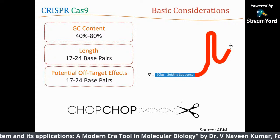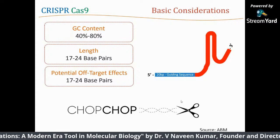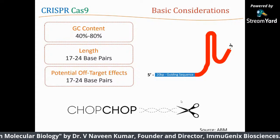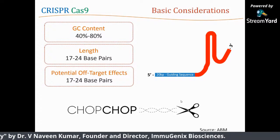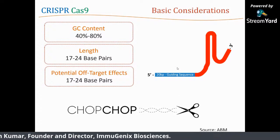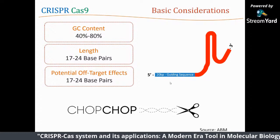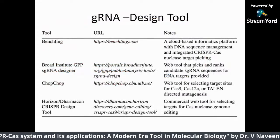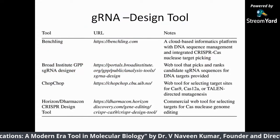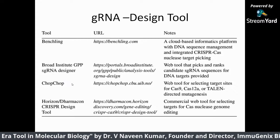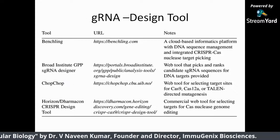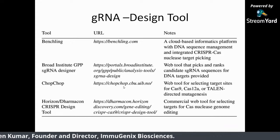What I mean by off-target effects is that instead of targeting gene A, the guide RNA goes and targets B, C, D, or randomly binds, resulting in cell death. That needs to be avoided. One online tool you can use is CHOPCHOP — it is an online tool where you can design a guide RNA. Other tools include Benchling, the Broad Institute tool, and Horizon. You put your target of interest where you want to cut, especially the exon and coding sequences, and you get 20 base-pair targets. Based on the scores, you determine which guide RNA to use.